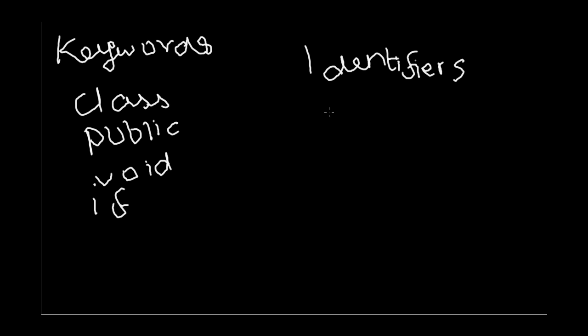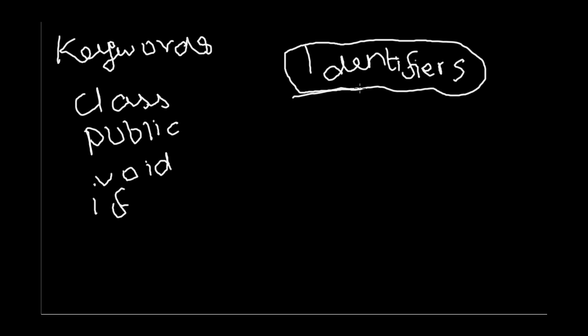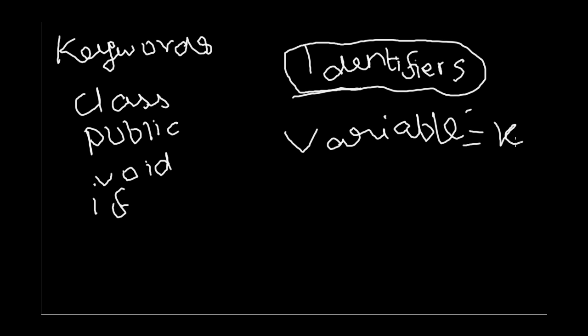Other than keywords, you have identifiers — all other words are identifiers. Does everyone know what a variable is? I'm sure you've all done algebra, so you know what a variable is. For example, you have x in algebra. So if you need to name a variable in Java, let's say you have a variable called 'sum' which stores the sum of two numbers.